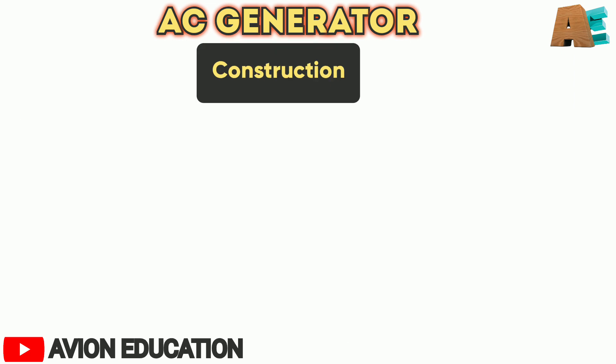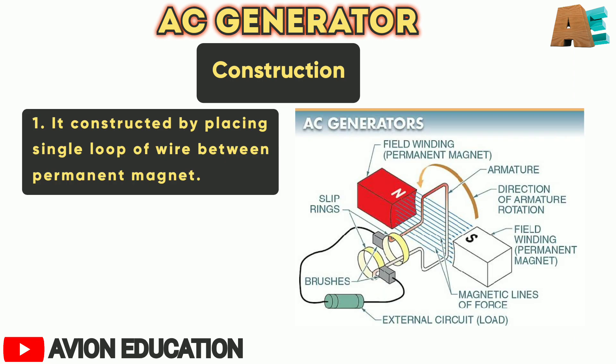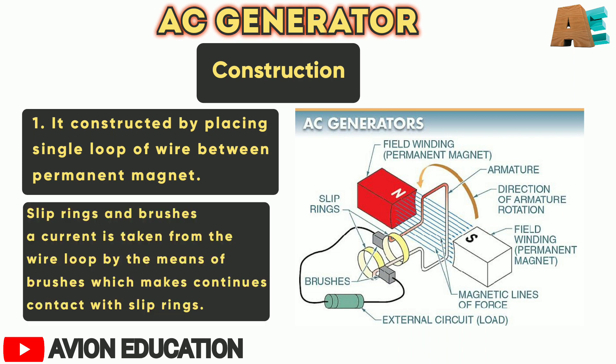The construction of an AC generator consists of two magnets and a conductive coil made of copper — also called the armature — which is placed between the magnets, along with slip rings and carbon brushes.